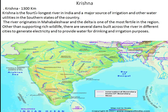Next is Krishna river, which is 1300 kilometers. Krishna is the fourth longest river in India and a major source of irrigation and other water utilities in the southern states. The river originates in Mahabaleshwar and its delta is one of the most fertile in the region. Several dams are built across the river to generate electricity, provide drinking water, and support irrigation. It also supports rich wildlife.